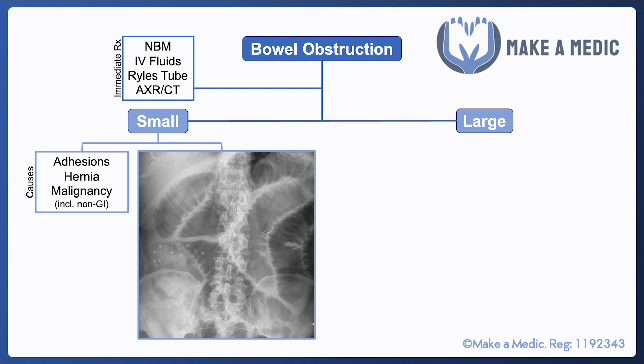With small bowel obstruction, here we have an abdominal x-ray and there are a few key features to look out for. The dilated loops of bowel tend to be towards the center of the film. Dilation of small bowel is considered to be anything greater than about three centimeters, following the three-six-nine rule: three centimeters for small bowel, six centimeters for large bowel, and nine centimeters for the cecum. The most characteristic feature is the presence of valvulae conniventes, which are folds in the mucosa that appear as radio-opaque lines going across from one bowel wall to the other.